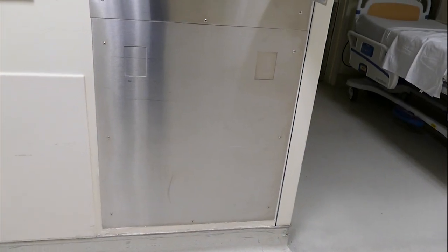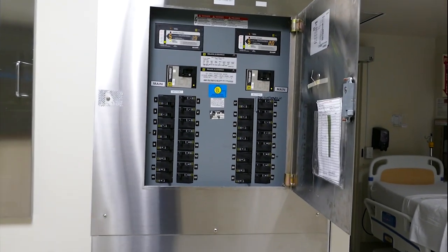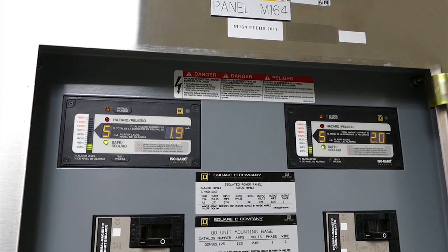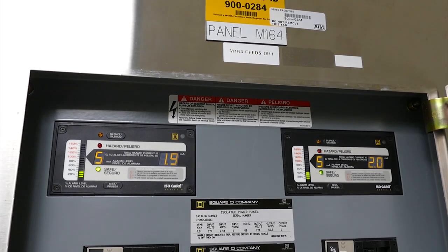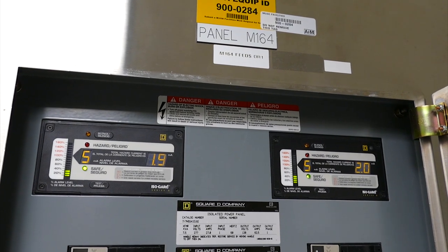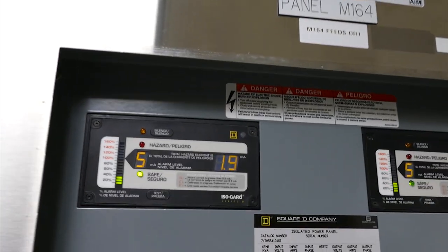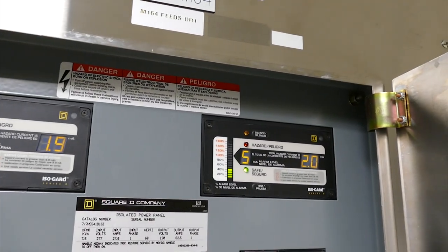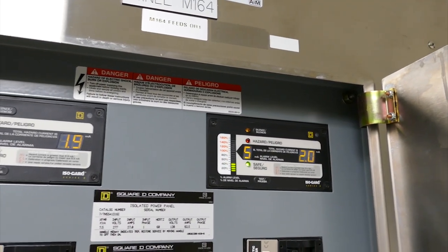So there's two transformers down there and the secondaries feed up here. What you have is these meters up at the top. They measure from the secondaries to ground and they display the amount of milliamps of current. You can see right there it's 1.9 and 2 milliamps.